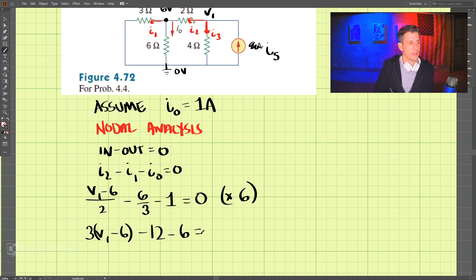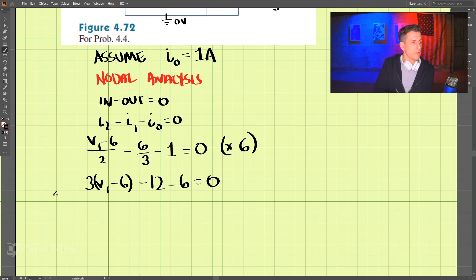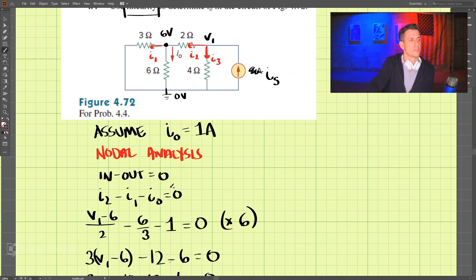Set that equal to zero. Now let's expand that: 3v1 minus 18 minus 12 minus 6 equals zero. So that is negative 36, that means v1 equals 12 volts. Let's write 12 volts here.